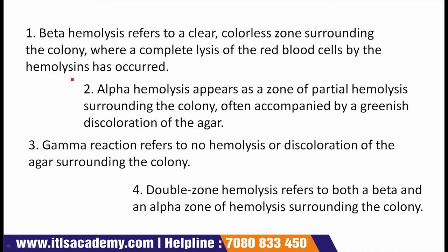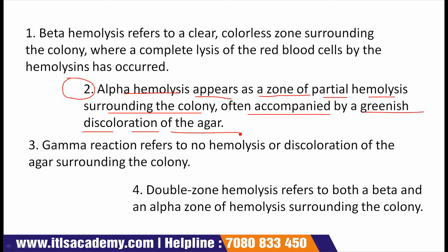Point 2 is alpha hemolysis, which appears as a zone of partial hemolysis surrounding the colony, often accompanied by a greenish discoloration of the agar. This is also best seen in subsurface colonies where the agar has been stabbed.